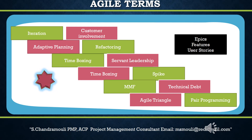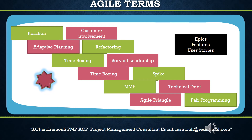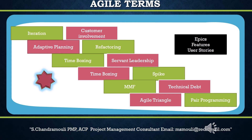A spike explores potential solutions for a difficult technical or design problem, which can be used to provide a more accurate estimate. If the team does not know whether a particular design approach will work out, it is recommended to do spikes to find out which design approach will work for the team. Spike solutions use controlled experiments to provide information.